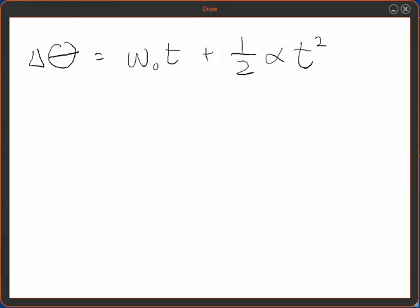You might also pick the one that says that delta theta over t is omega plus omega naught all over 2, that's a particularly simple one, let's try that one.